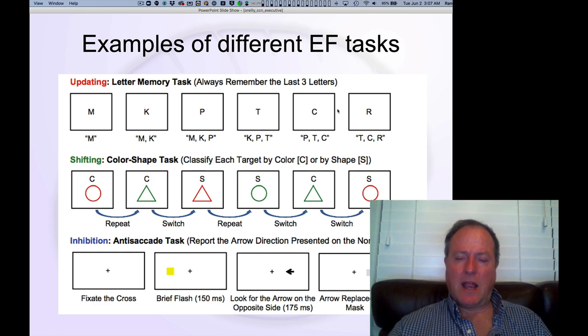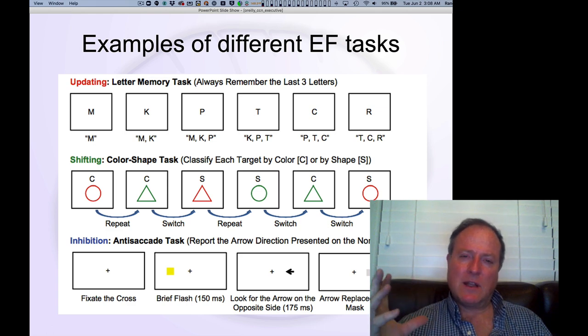Here are some examples of other types of executive function tasks that have been widely used. There's a letter memory task which taps into this ability called updating, and these functional associations have been used to categorize different components that go into executive function. Miyake and Friedman and others have found that these can be dissociated in different people. There's individual differences in how good people are at these different aspects of executive function.